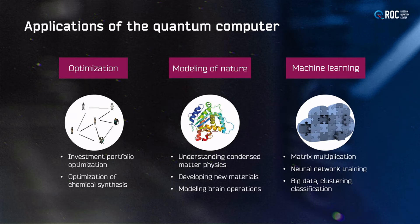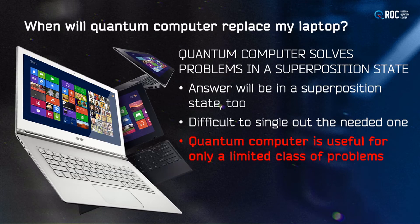A machine like this has multiple applications, including optimization, modeling of nature, and machine learning. But a common question is: when will it replace my desktop or laptop? The answer is probably never, because you don't really use your computer for calculation — you use it to store, exchange, and process information. A quantum computer is a specific machine for calculations. But even for pure computational tasks, there is a problem.